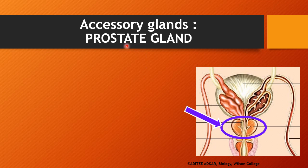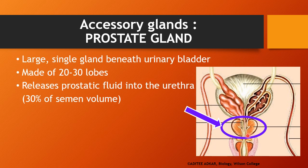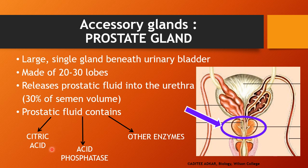Coming to the next accessory gland, the prostate gland. The prostate gland is a single large gland present below the urinary bladder. The prostate gland surrounds the urethra from all sides and internally is made up of 20 to 30 lobes. The prostate gland produces a slightly acidic fluid known as the prostatic fluid. The prostatic fluid forms 30% of the total semen volume. It contains citric acid, acid phosphatase and several other enzymes. Acid phosphatase will protect the sperms from the acidity in the vagina.